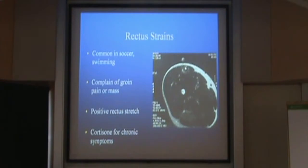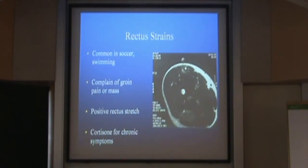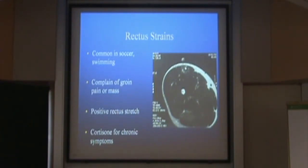One of my resident partners saw a bulge in a patient's groin and thought it was a tumor, wanting a full workup. My partner Dr. Beckler pulled down the patient's scrubs and said, 'I got one of these too — it's a rectus femoris avulsion.' If it goes away when the thigh is relaxed but pops up with an active straight leg raise, it's a rectus avulsion. For the positive rectus stretch test in chronic tendinitis, I lie them prone, hyperflexed knee, and lift their knee off the table to recreate symptoms. Cortisone shots work pretty liberally for swimmers with chronic rectus tendinitis.